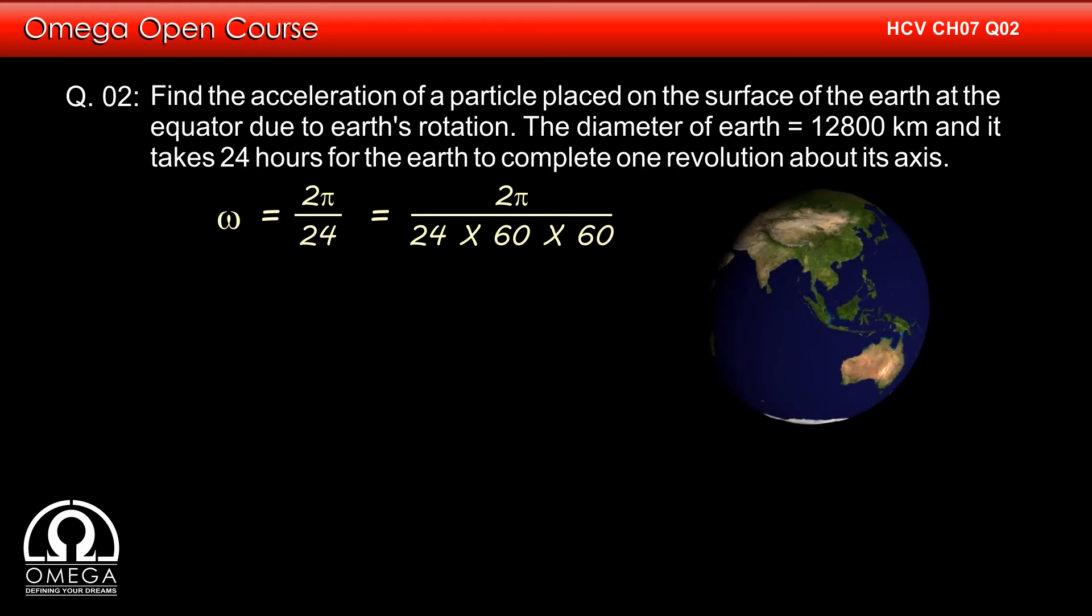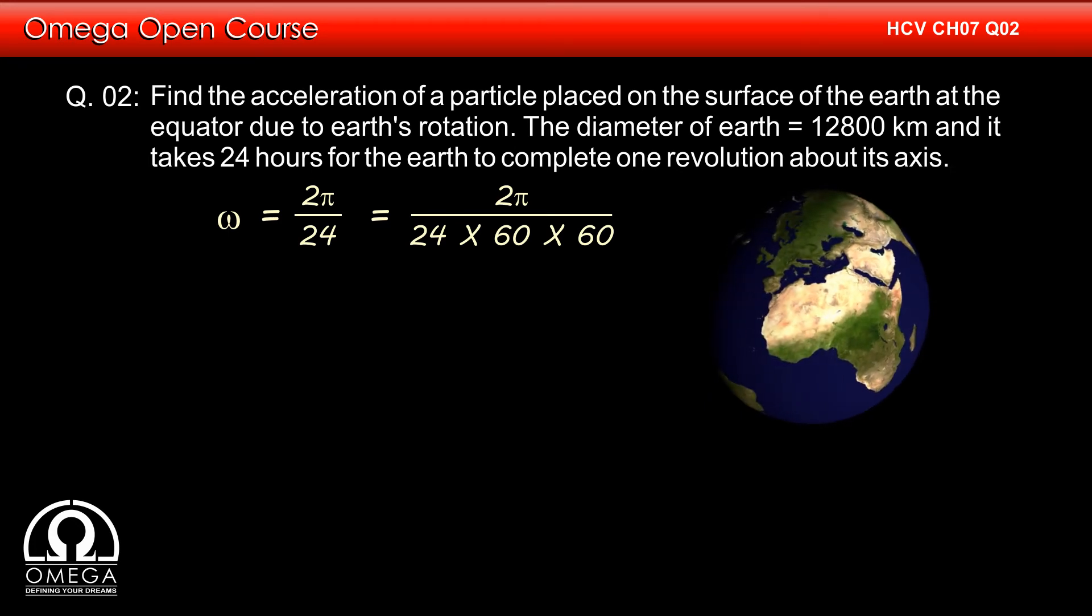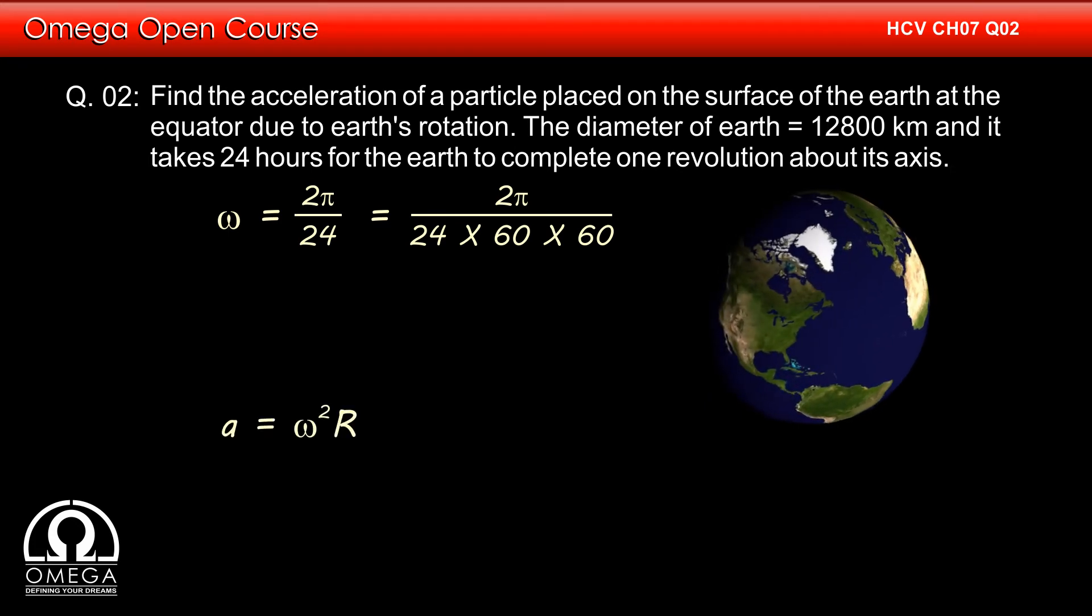For a particle moving in a circle of radius r with angular speed ω, its acceleration is given by ω²r.